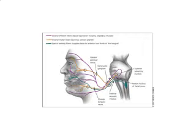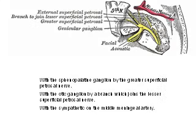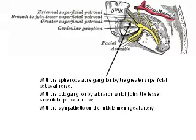Here we see a scheme of distribution of the geniculate ganglion, showing the knee of the geniculate ganglion with the petrosal nerves arising from the anterior surface. The geniculate ganglion communicates: number 1, with the sphenopalatine ganglion by the greater superficial petrosal nerve; number 2, with the otic ganglion by a branch which joins the lesser superficial petrosal nerve; and it communicates with the sympathetic on the middle meningeal artery.